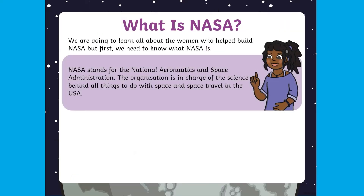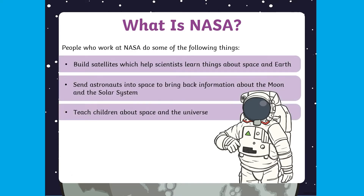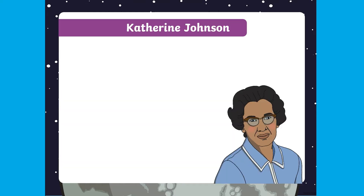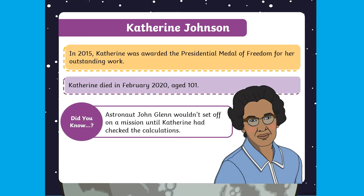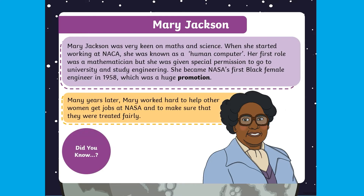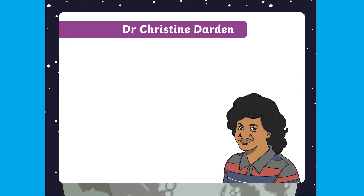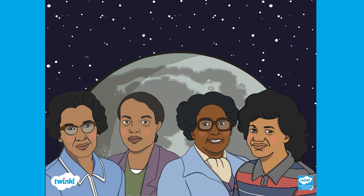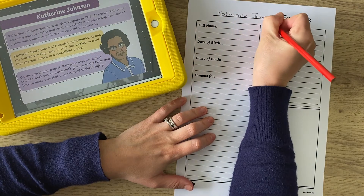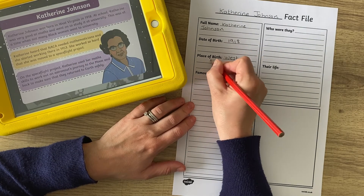This PowerPoint is ideal for teaching Key Stage 1 children about the women who worked at NASA at a time when there were few women employed there, and also very few Black people were employed. Through this PowerPoint, children will learn all about Katherine Johnson, Dorothy Vaughan and Mary Jackson, who were known as human computers and who calculated complex maths equations to ensure astronauts returned to Earth from space missions safely. After learning about these wonderful, incredible people, why not get children to complete a fact file based on one of the people that they learnt about?